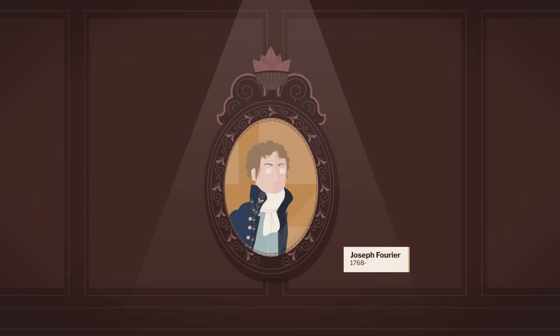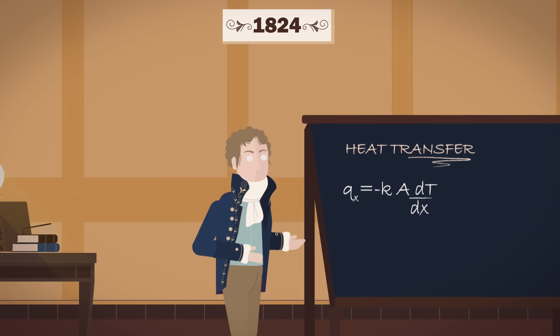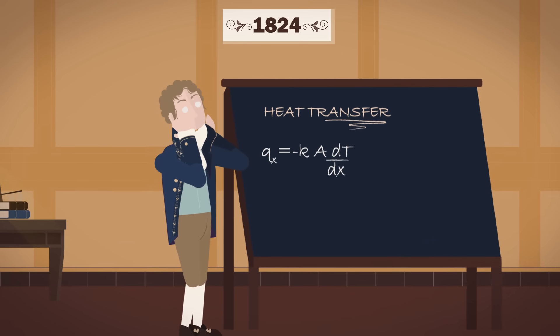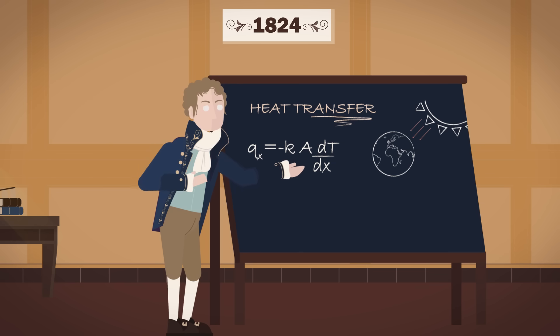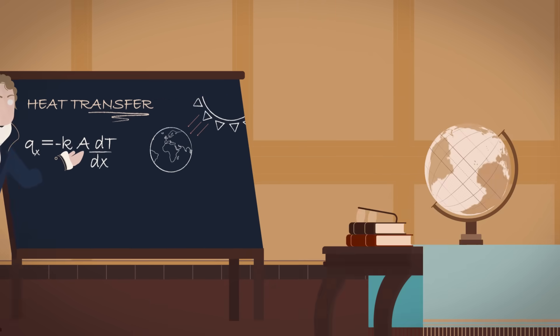Joseph Fourier, a French mathematician, was so fascinated by the equations governing heat transfer that he decided to calculate how much energy from the Sun hit our planet.